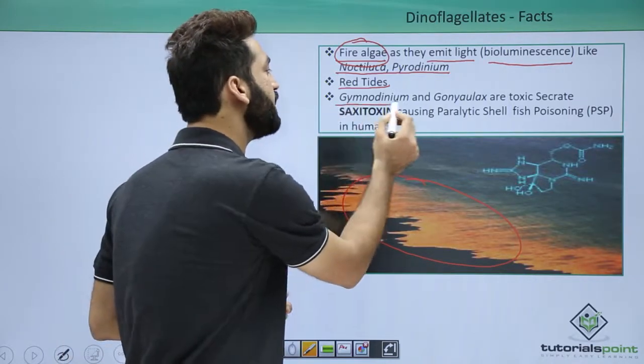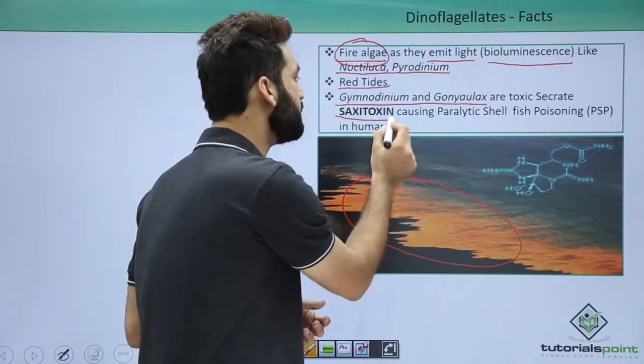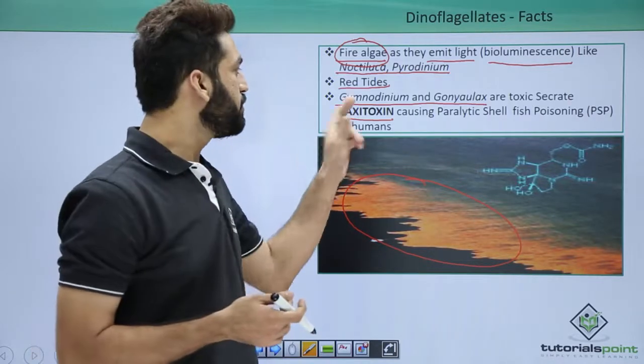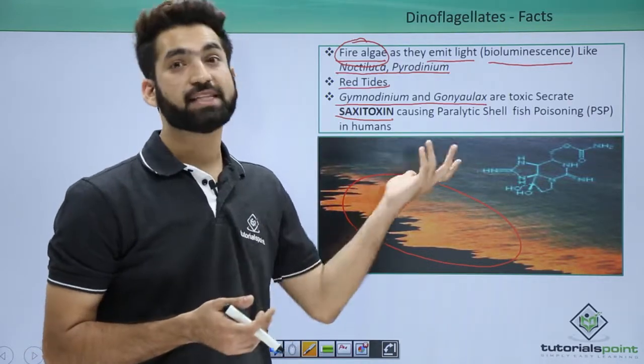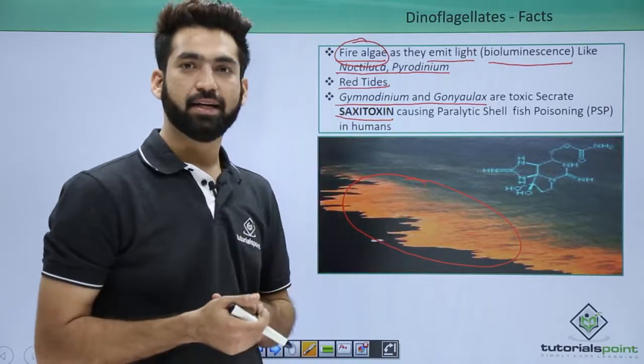We also talk about there are two red dinoflagellates that secrete toxins called saxitoxins. The toxins are also called brevetoxins. Gymnodinium and Gonyaulax catenella especially secrete toxins in the sea.